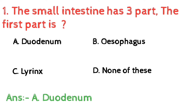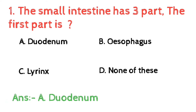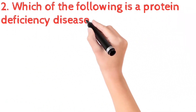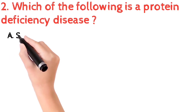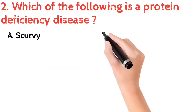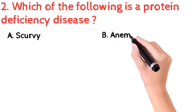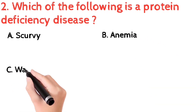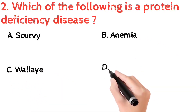The function of the duodenum is to digest food coming from the stomach and to absorb nutrients and water from food so they can be used by the body. Second question: which of the following is a protein deficiency disease? a) scurvy, b) anemia, c) rickets, d) kwashiorkor.